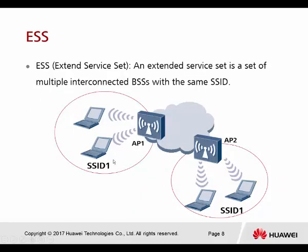The next is ESS — extended service set. This is an extended service set for multiple interconnected BSSs with the same SSID. When we have one SSID broadcast from AP number one, because this coverage — we call it BSA, the basic service area — I can only cover this area. If you leave my area, you lose the connection. To extend the service into another area, you require another AP using the same SSID configuration. You also need to make sure these two SSIDs are using the same ESS. Then when a PC roams to another AP, it knows it's still connected to the same SSID.